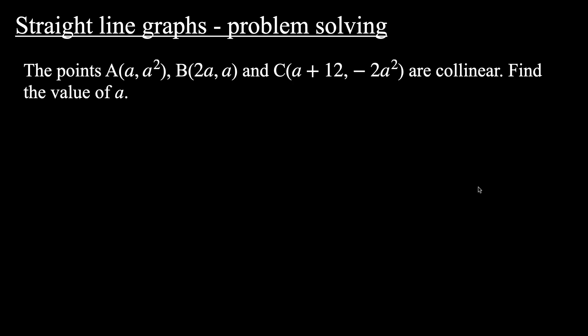In this video I'm going to look at some problem solving questions to do with straight line graphs. The first question says the points A(a, a²), B(2a, a), and C(a+12, -2a²) are collinear. Find the value of a.